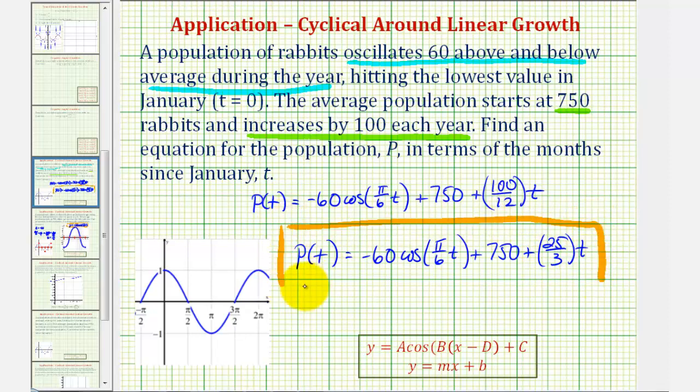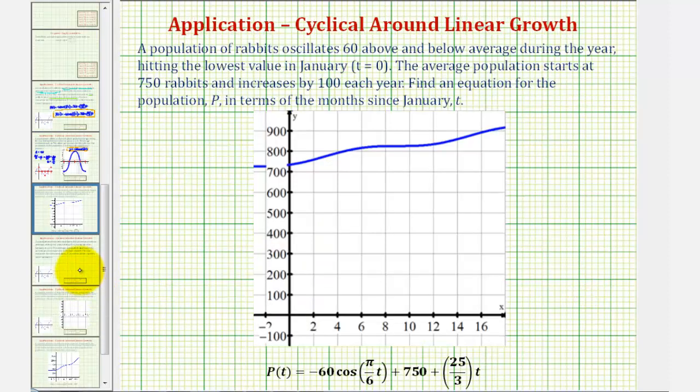Let's finish by looking at the graph of this function. Notice how this does look somewhat linear, but it does have an oscillation in it as well, because the population oscillates 60 above and 60 below the average during the year. So, again, this looks somewhat linear, but it has an oscillation above and below the basic linear growth.